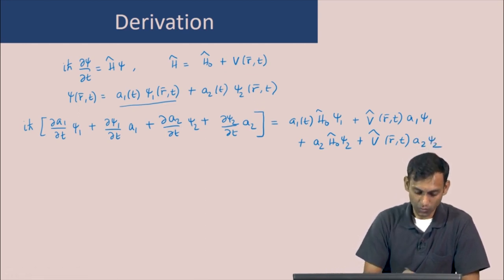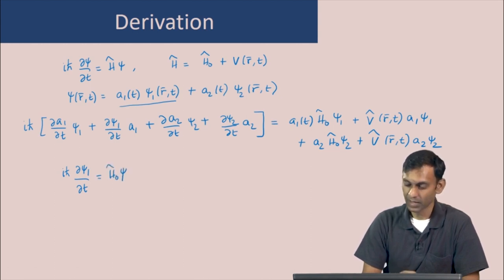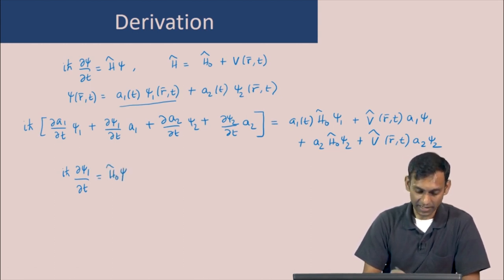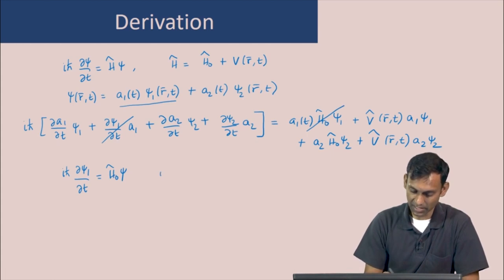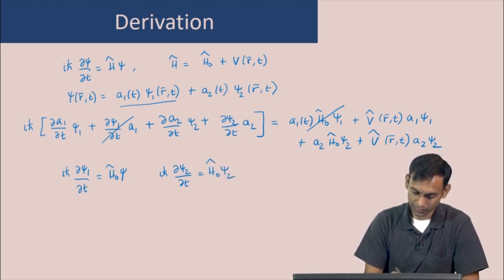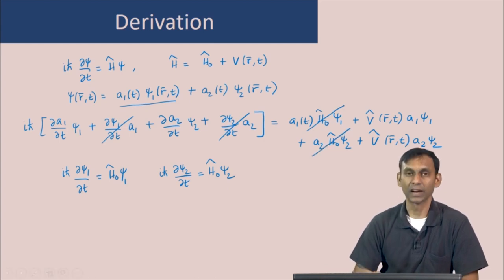Since psi1 and psi2 are solutions of the Schrödinger equation, i-h-bar del-psi1/del-t equals H-naught·psi1, we can cancel two terms on both sides. Similarly, using i-h-bar del-psi2/del-t equals H-naught·psi2, we cancel the corresponding terms on the left and right sides.